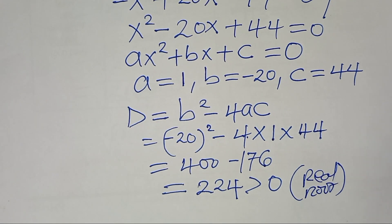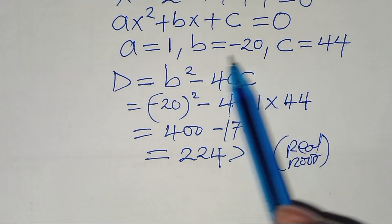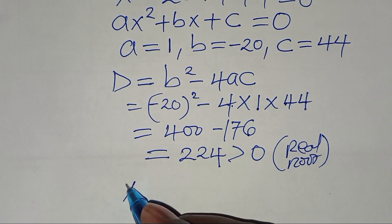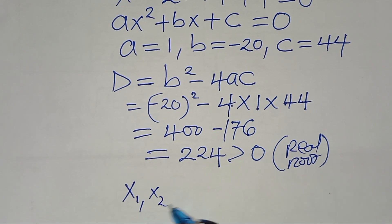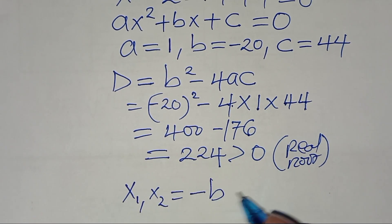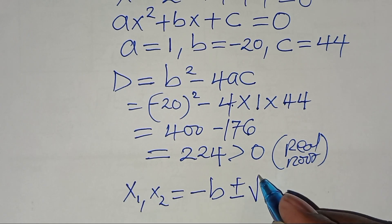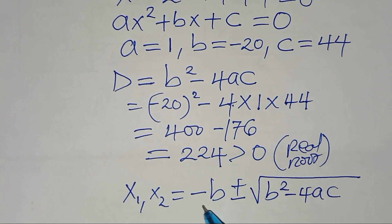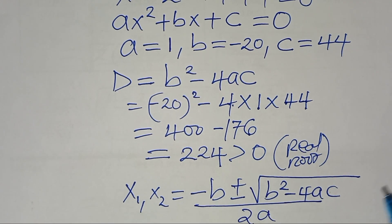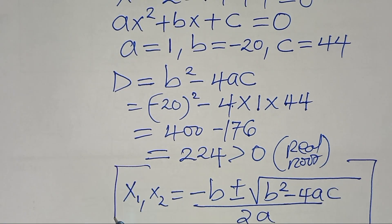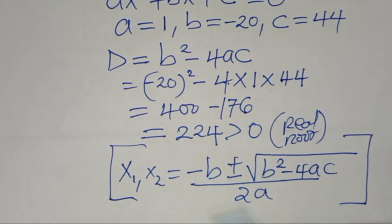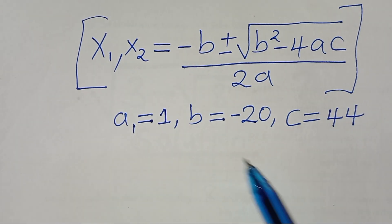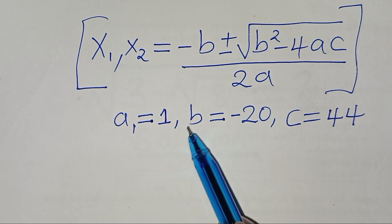Now let's find the values of x. We apply the quadratic formula: x₁, x₂ equals negative b plus or minus the square root of b squared minus 4ac, divided by 2a. Let's apply this quadratic formula and substitute the values of a, b, and c.